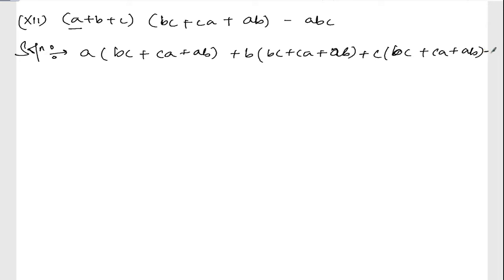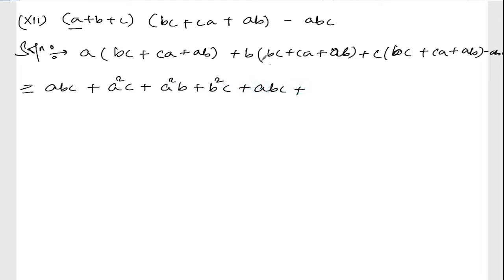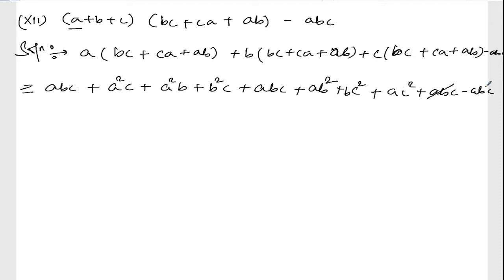After multiplying, we get: abc + a²c + a²b, then b²c + abc + ab², then bc² + ac² + abc, plus abc, minus abc. So the abc and abc cancel out.